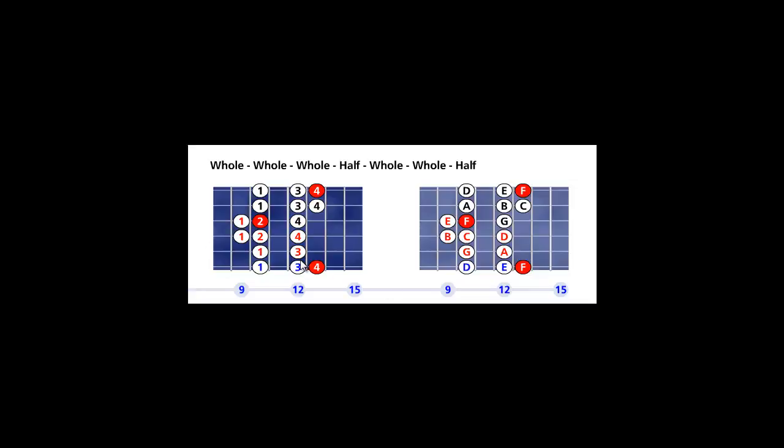Set your metronome up to a tempo that's not too fast, not too slow, so you can play right on the beat. Use alternate picking. At first you need to focus your eyes on the left fretboard. Pay attention to the fingering, especially the finger that's used to play the roots.